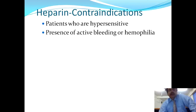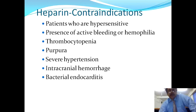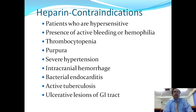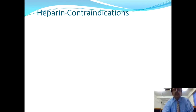Heparin contraindications include patients who are hypersensitive, patients with active bleeding or hemophilia, patients with thrombocytopenia, purpuric states, severe hypertension, intracranial hemorrhages, bacterial endocarditis, active tuberculosis, and ulcerative colitis. In all these states where there is already a tendency toward bleeding, heparin should never be offered.